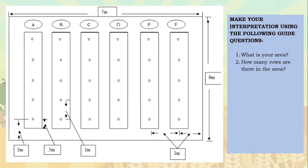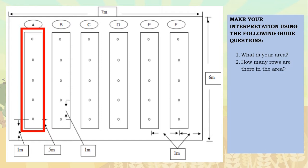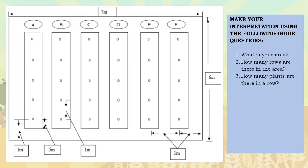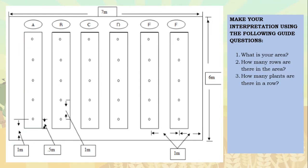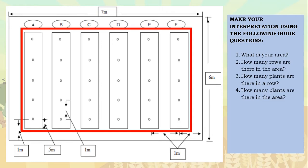Next, how many rows are there in the area? As you can see, each letter defines each row. We have 6 rows in our orchard. How many plants are there in a row? Per row, we have 5 plants. How many plants are there in the area? We will just multiply each row per plant, and we get 30 plants in the area.